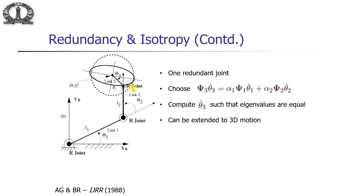Now if we want to make this ellipse a circle, suppose we have three joints — theta 1, theta 2, and theta 3. The velocity vector at the tip is now a function of theta1-dot, theta2-dot, and theta3-dot. We have one redundant joint since we are only interested in x and y, not the orientation of the last link. We can choose theta3-dot, where psi3 is the column of the Jacobian from the derivative of x and y with respect to theta3.